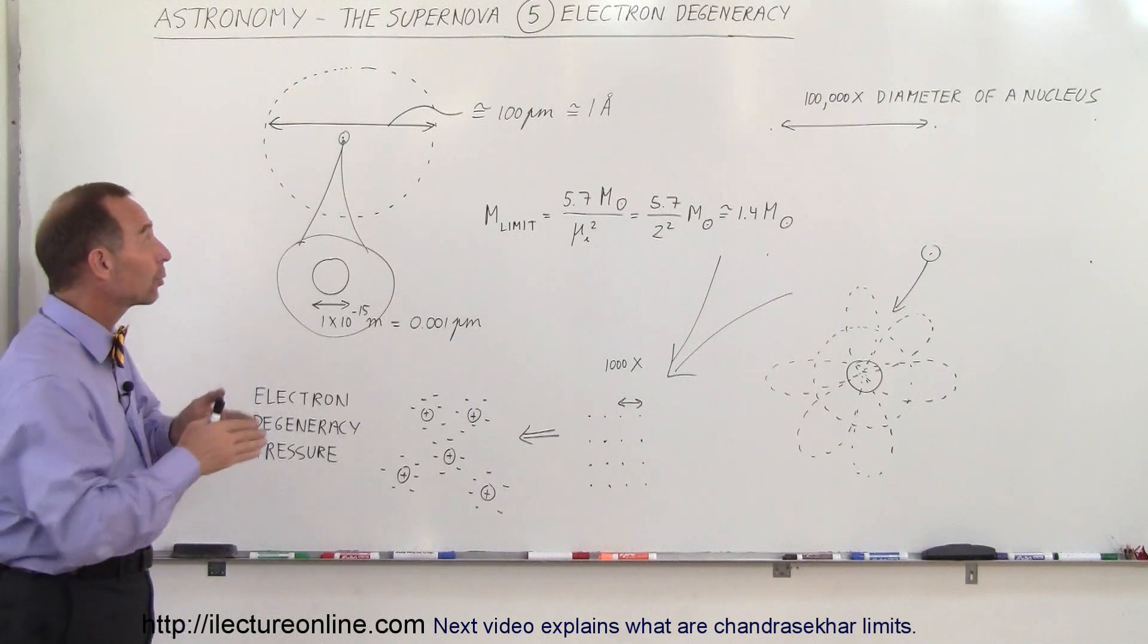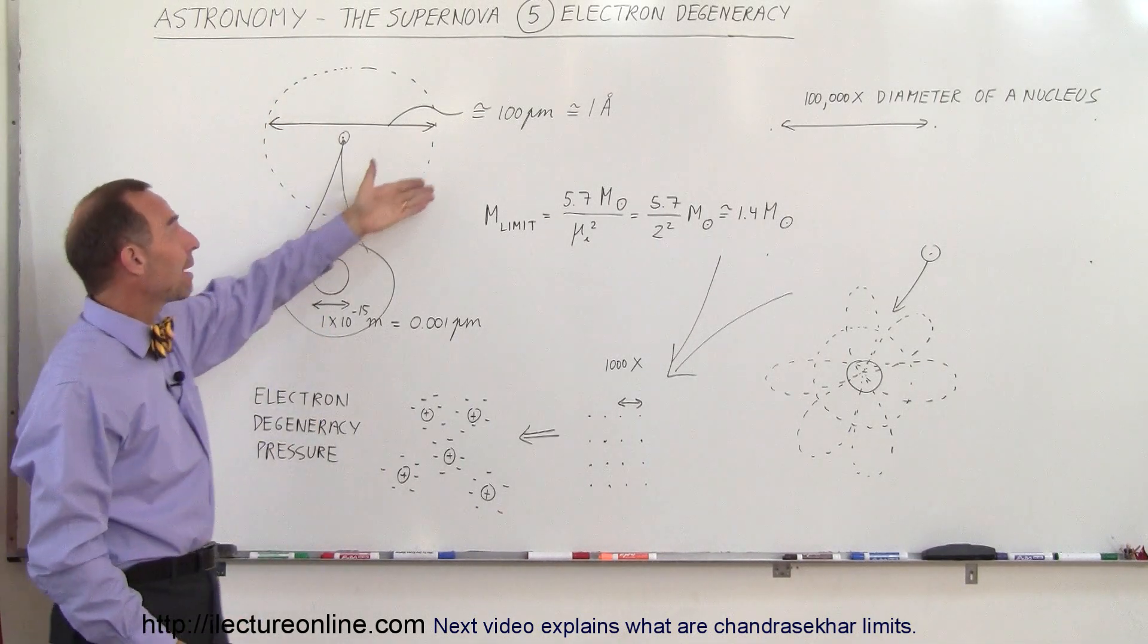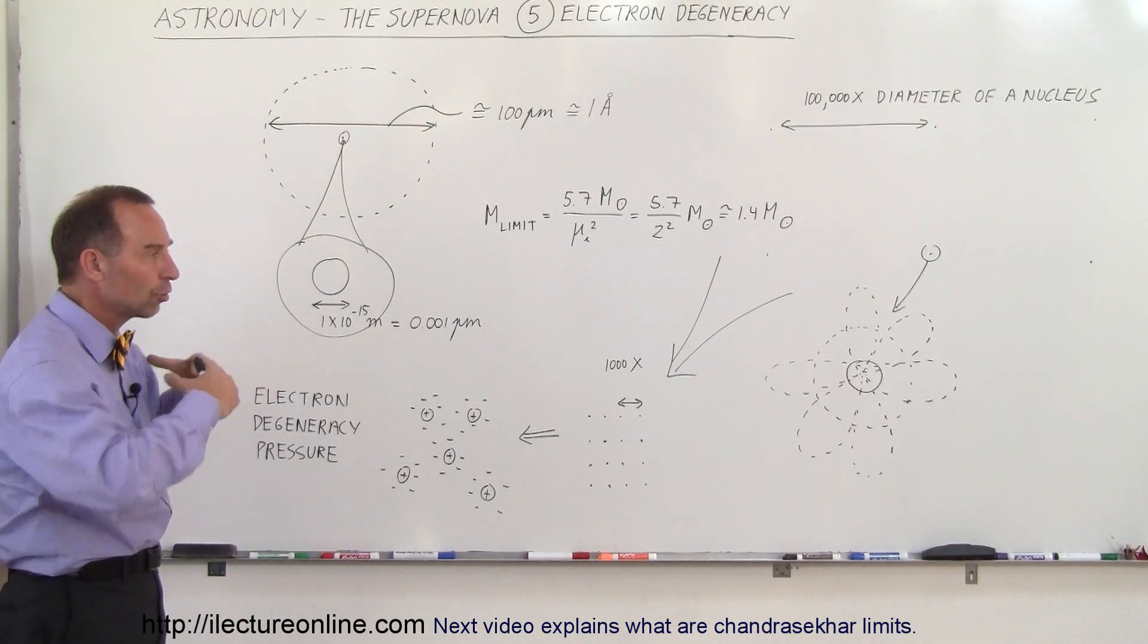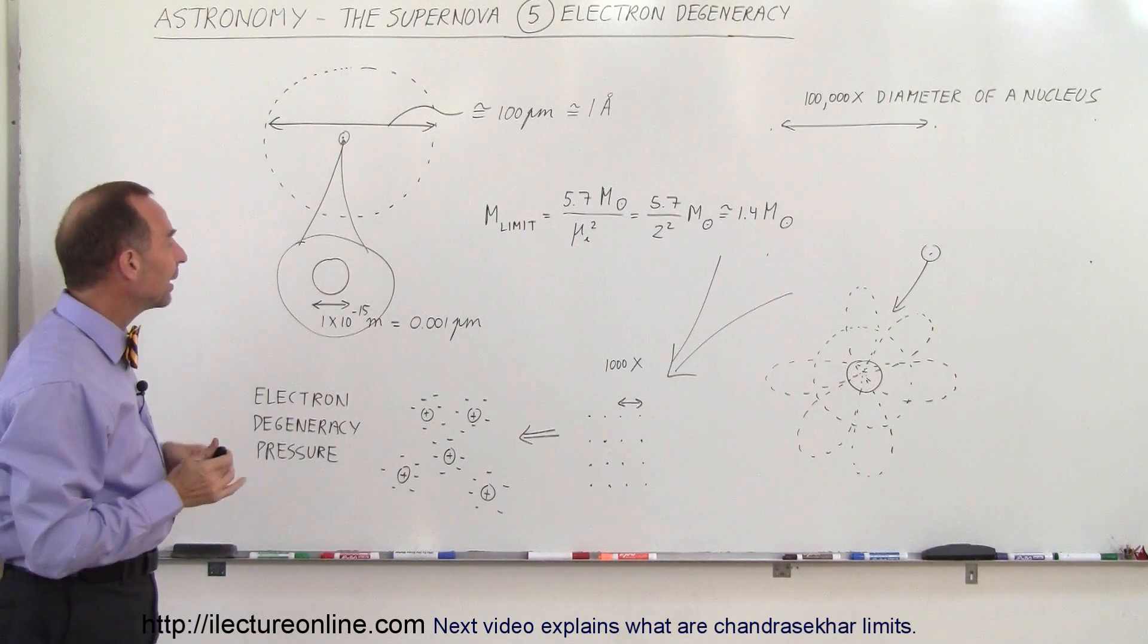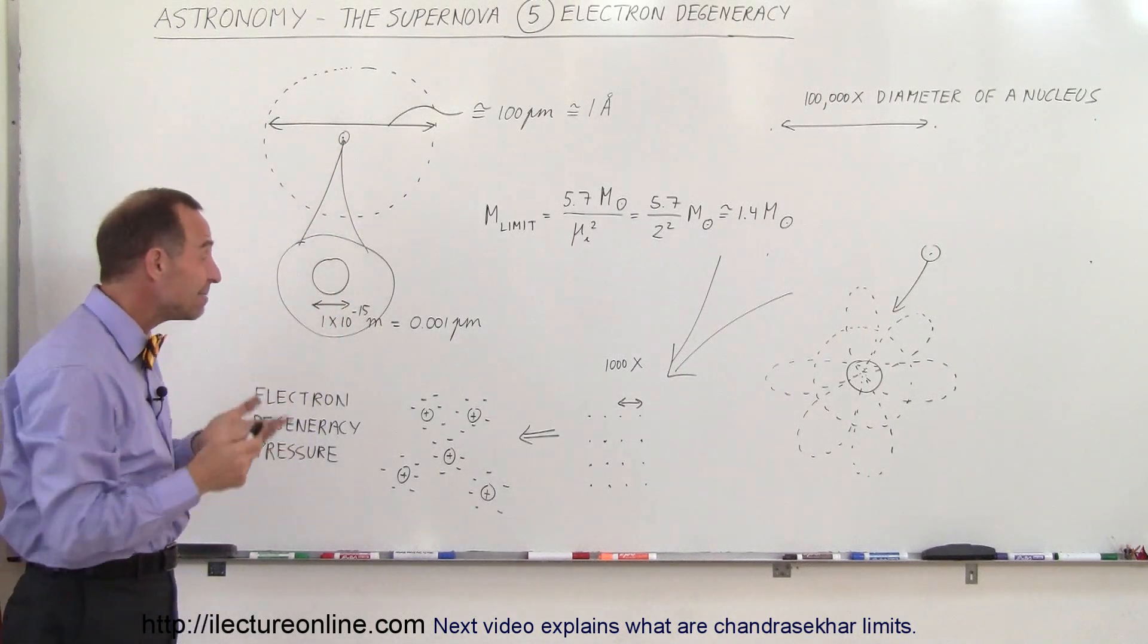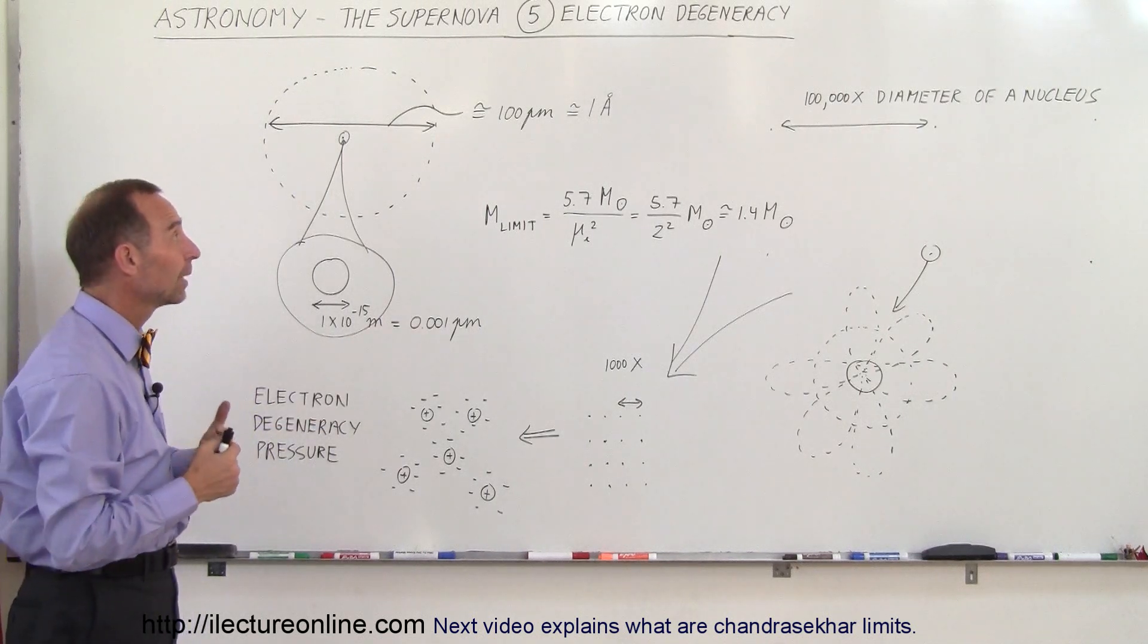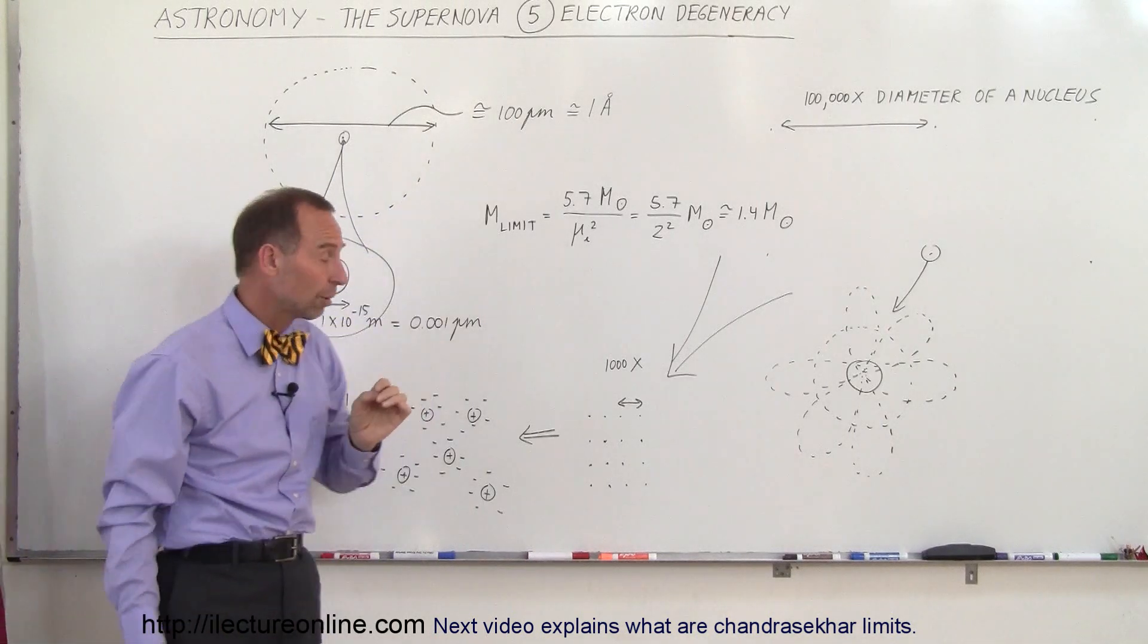In order to understand that, let's go back to a simple atom. Let's say we have an atom that has a nucleus and a boundary of the atom defined by the electron orbits. There are orbitals that cause electrons to exist around the nucleus of an atom. Typically the diameter of the nucleus is very small, around 1 times 10 to the minus 15 meters, which is 0.001 picometers.